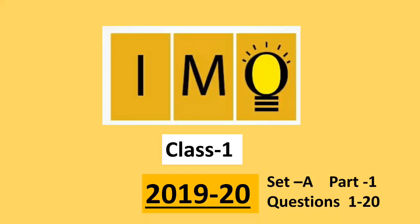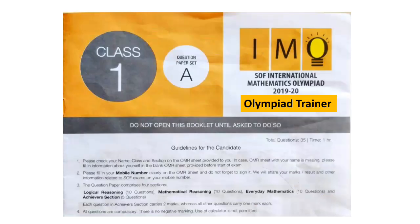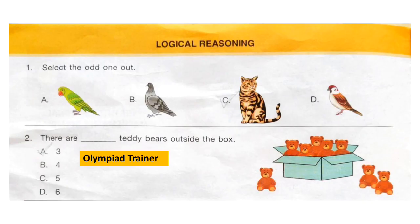Welcome to our channel Olympiad Trainer. Here I am with the question paper of IMO, that is International Mathematics Olympiad exam for class 1, year 2019-20, Set A. The question paper comprises four sections: logical reasoning, mathematical reasoning, everyday mathematics, and achiever section. In this video we are going to see the first two sections. For the other two sections, please click on the link given in the description box. New users, please subscribe to our channel Olympiad Trainer for more such solved question papers. So let's start with the first section, logical reasoning.